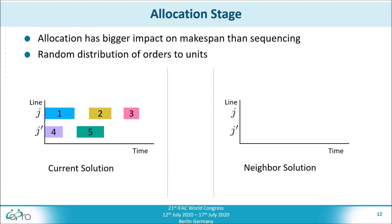The reasoning behind splitting our approach into two different stages is that the allocation of orders to lines has a far greater impact on the makespan of the schedule compared to the sequencing of the orders.